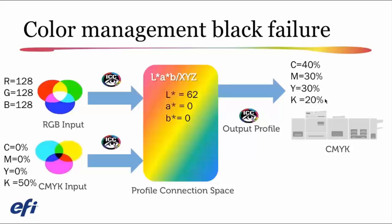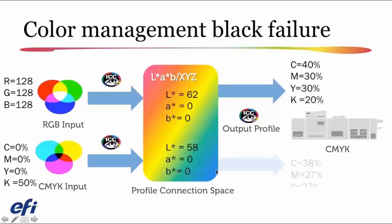Another common example is the CMYK input. Maybe all the grayscale pages were accidentally made as CMYK using black as the only value. For example, the black channel is at 50% with no cyan, magenta, or yellow in any of the page objects. When I color manage that 0, 0, 0, 50% K into profile connection space, I again get a neutral LAB value. When I convert that through the output profile with default color management, I again get a four-color gray output — resulting in a color click I didn't expect.